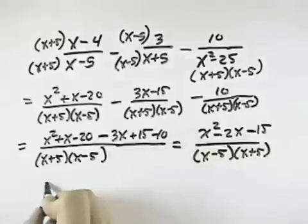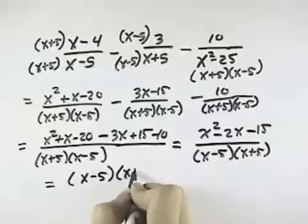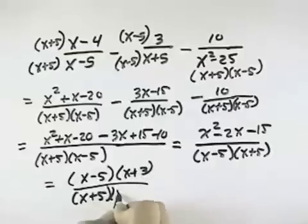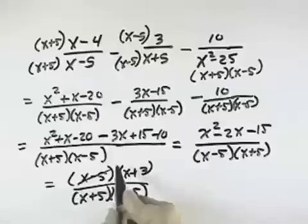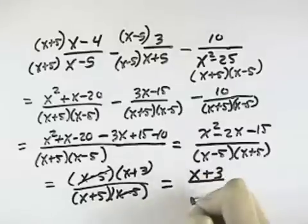And in this case, we can factor the numerator into x minus 5 times x plus 3 over our common denominator. We have a common factor of x minus 5, so we can cancel that, just leaving the x plus 3 in the numerator and the x plus 5 in our denominator.